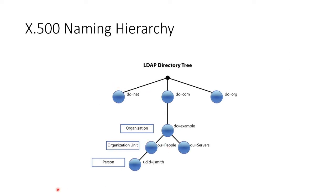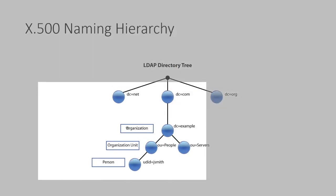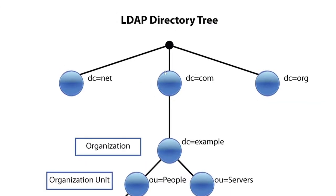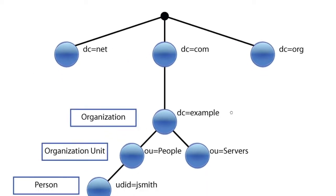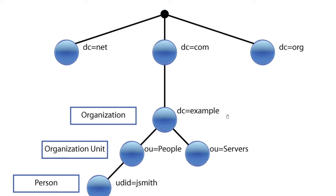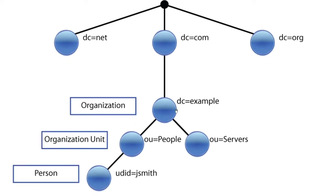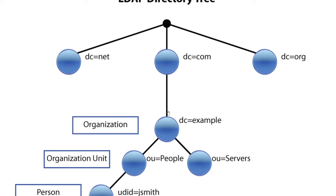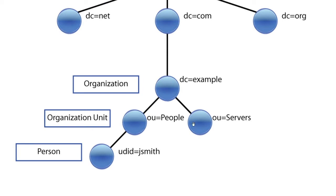The naming hierarchy for X.500 works like this: we have domain components like org, com, net, or mil. Underneath com, you have names like Microsoft or CompTIA, while EC Council would fall under org — these are the regular domain components. From there, we break out into organizational units, which are the functional equivalent of folders. So a company might have OUs for people and servers, and underneath those you have user accounts and server accounts respectively.